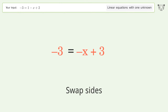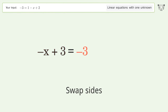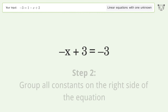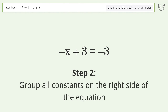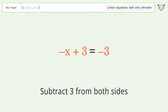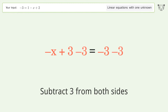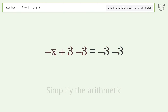Swap sides. Group all constants on the right side of the equation — subtract three from both sides. Simplify the arithmetic.